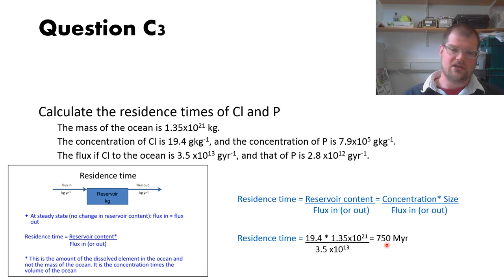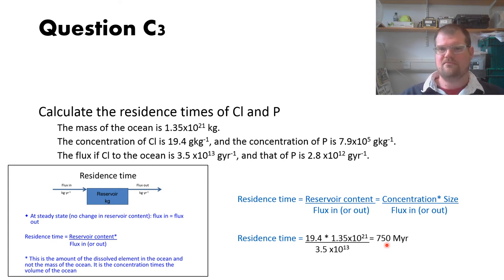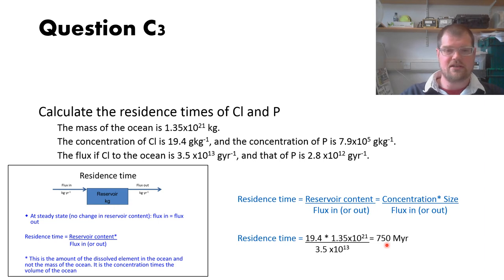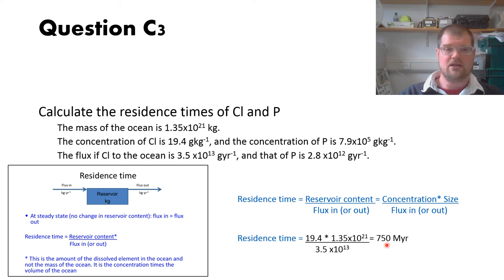The residence time of chlorine is 750 million years, and the phosphorus one was 38,000 years. Getting the right number, the right precision, and the right units are all important for getting those answers fully credited and marked.